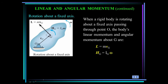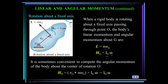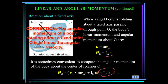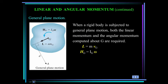For rotation about a fixed axis O, the linear momentum is the mass times the velocity of the mass center, and the angular momentum is the moment of inertia about the mass center times omega. Applying the parallel axis theorem and transferring to point O, this simplifies so that the angular momentum for a body rotating about a fixed axis O is the moment of inertia about O times omega. In general planar motion — meaning the body is both translating and rotating — it will have both linear momentum and angular momentum.